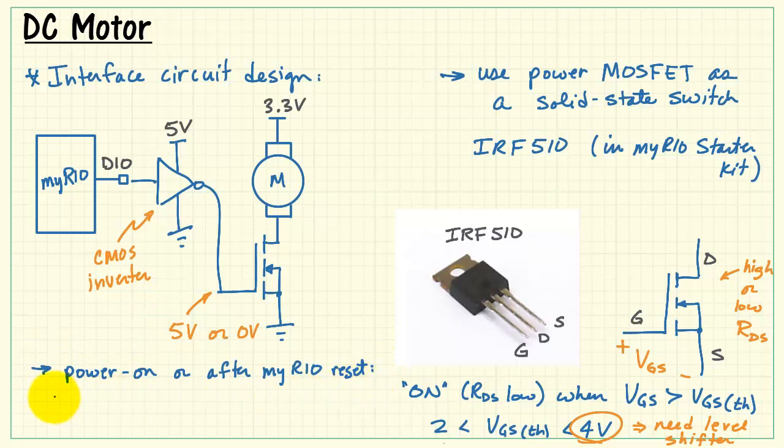Here's another important consideration dealing with the power-on situation or after a MyRio software reset. The DIOs all go to input mode in this case, and the 40k internal pull-up resistors to 3.3 volts become an important consideration for the circuit.